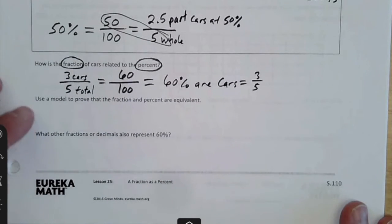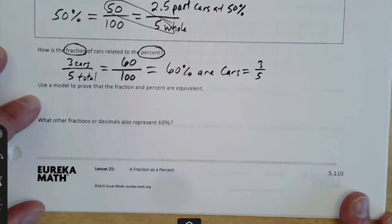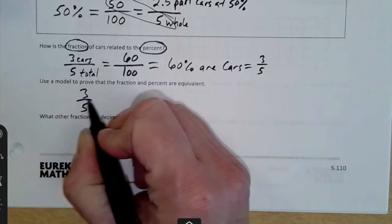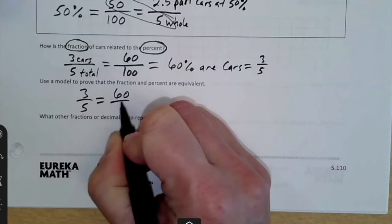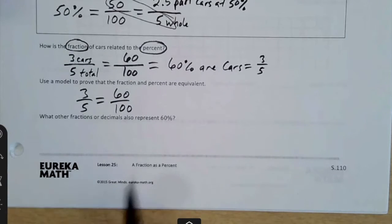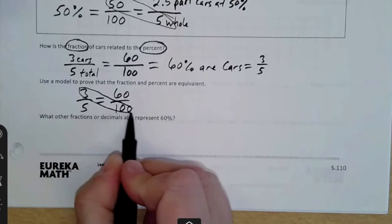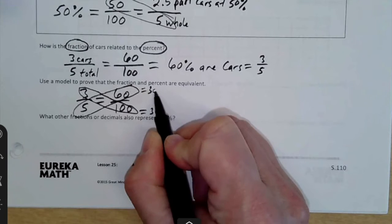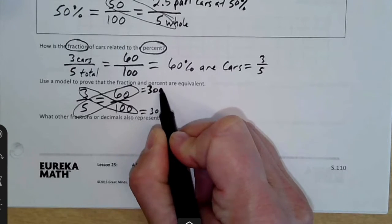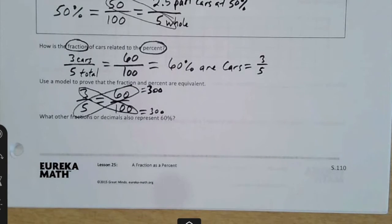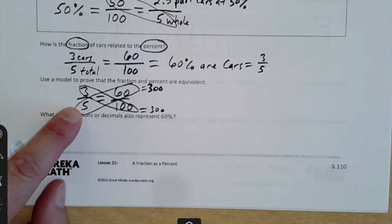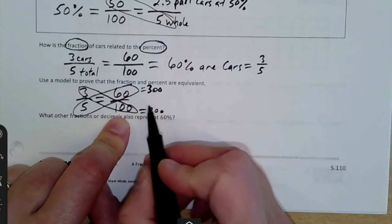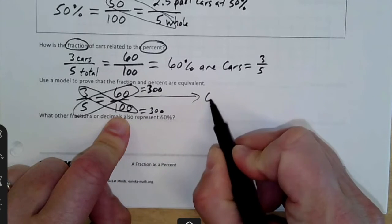Use the model to prove that the fraction and percent are equivalent. So I would use the cross products model. Three to five is the same thing as 60 to 100. And when you use cross products, this equals 300. And then five times 60 also equals 300, and that shows they're equivalent. We also know that three out of five and 60 out of 100 are the same. Anytime you have a number out of 100, that is your percent, so 60%.